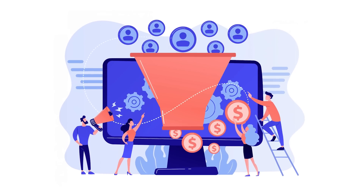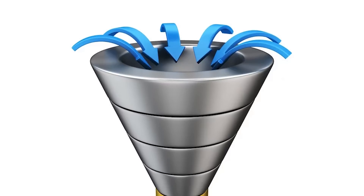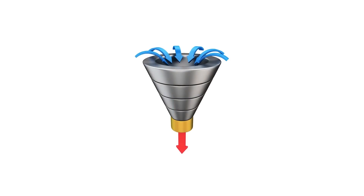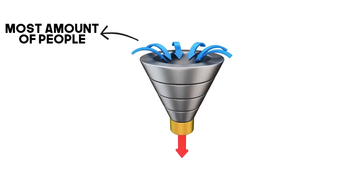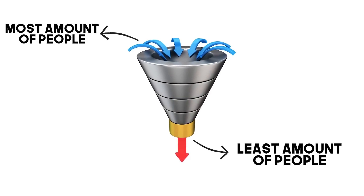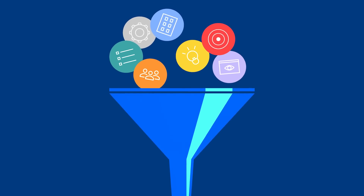If you think about a lead generation funnel as a funnel — a funnel starts really wide on top and ends at the bottom. At the top, you have the most amount of people, and at the bottom, you have the smallest amount. It goes from them knowing nothing about your business to them making a purchase. They travel down this funnel and there at the bottom lies the gold — there's the money.